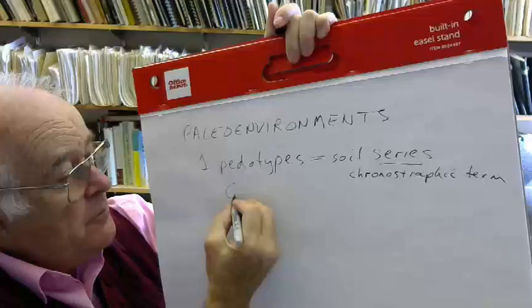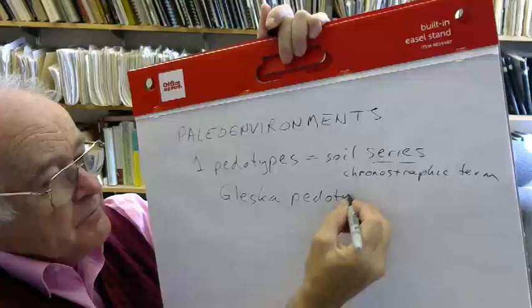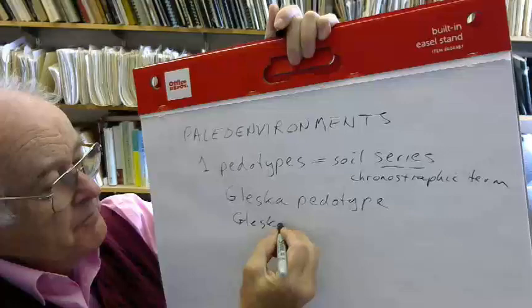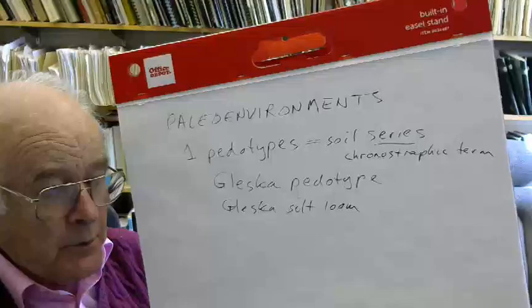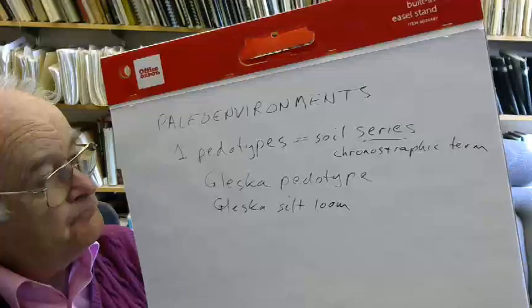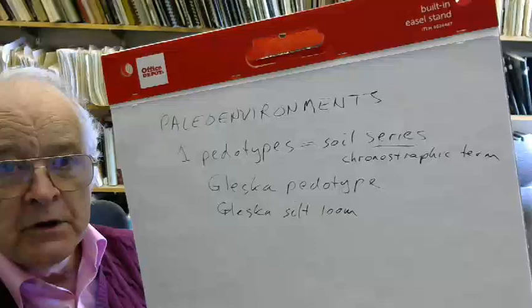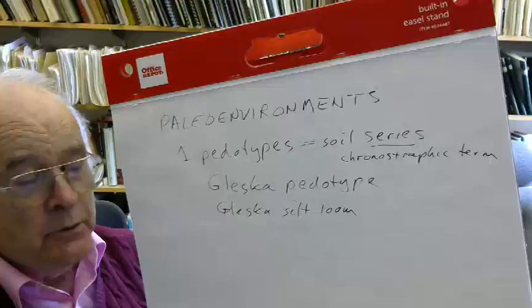I coined this word in 1994 because it equals soil series. A pedotype is a soil series. Why do we need a new word? Well, that's because this word is problematic. Series in geology is also a chronostratigraphic term. So you have, for example, the Comanche series and the Trinity series, two thick sequences of rocks in the Cretaceous of Texas.